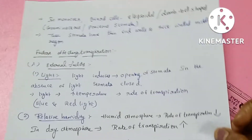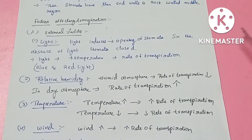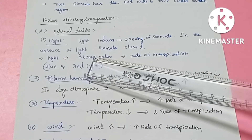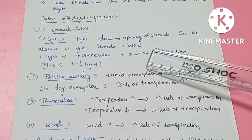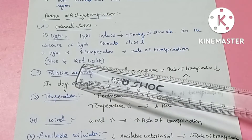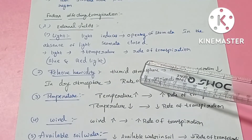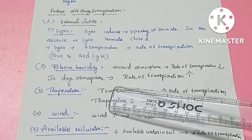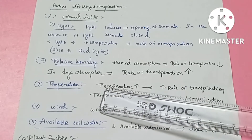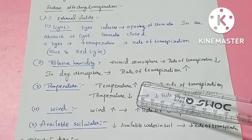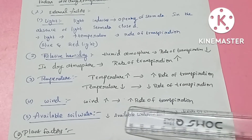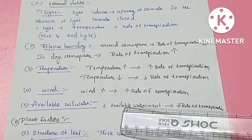Now we will see the factors affecting transpiration. External factors include light, relative humidity, temperature, and wind. Blue light and red light both cause stomatal opening. Temperature increase increases the rate of transpiration.